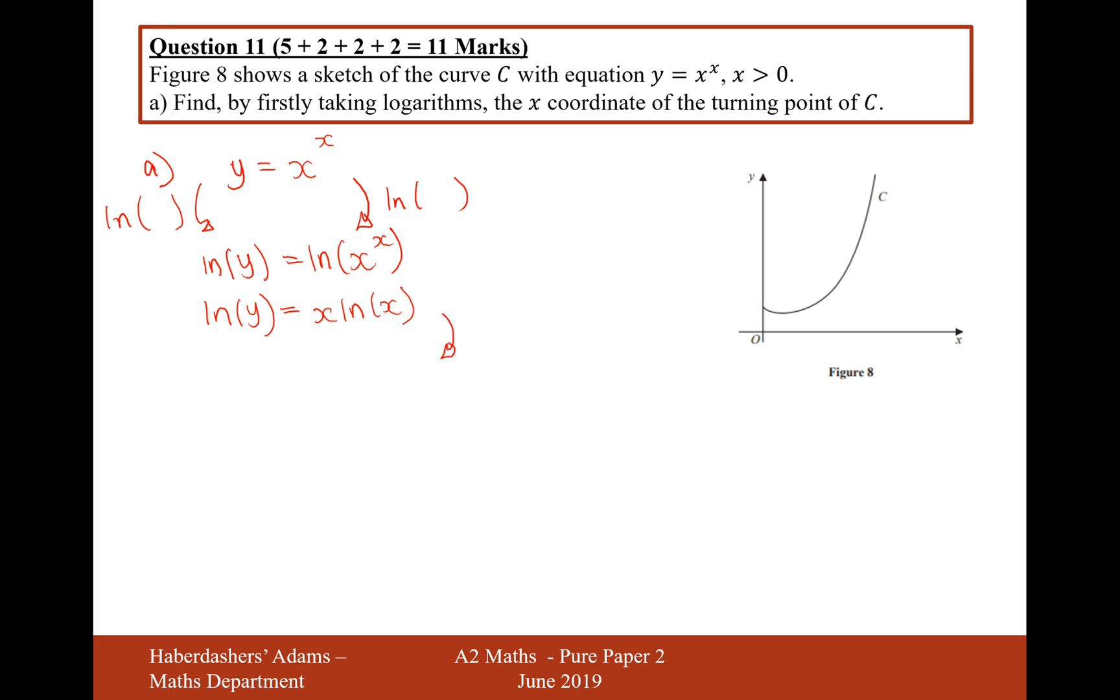Now, what we're going to do is implicitly differentiate on both sides with respect to x. When you differentiate ln y with respect to x, it gives you 1 over y dy by dx. That's how you differentiate ln y with respect to x.